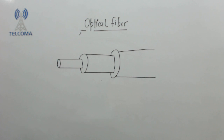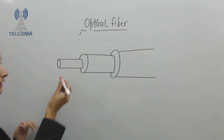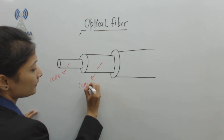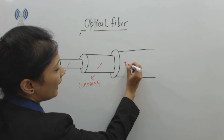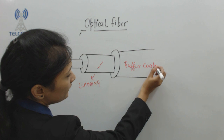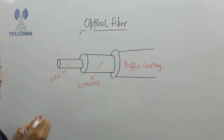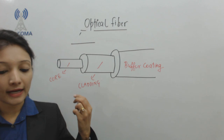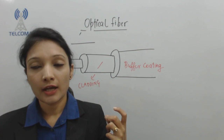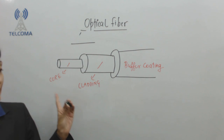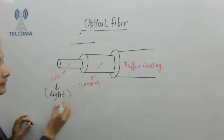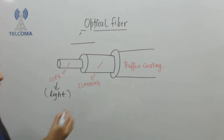The optical fiber has three components: core, cladding, and buffer coating. The optical fiber is as thin as a strand of human hair, and inside it there is a division into core, cladding, and buffer coating. Light travels through and is kept inside the core of the optical fiber.